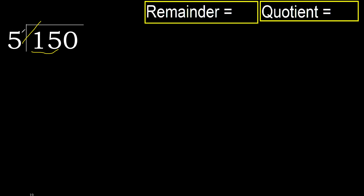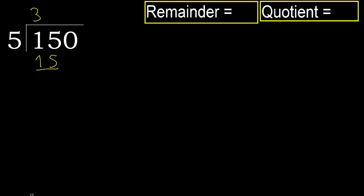Multiply by 4: 20, but 20 is greater. Multiply by 3: 15, and 15 is not greater. So 15 minus 15 equals 0.